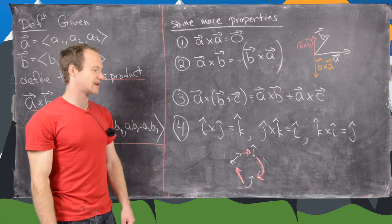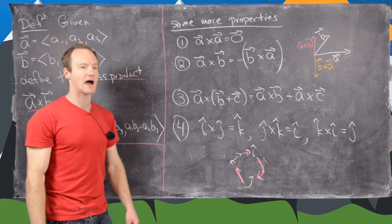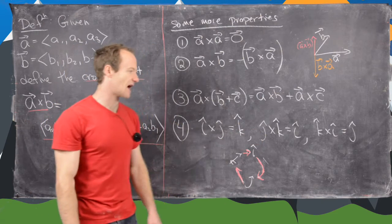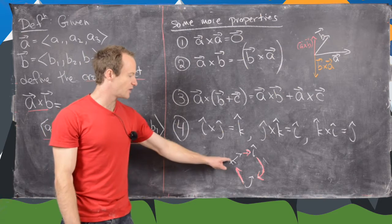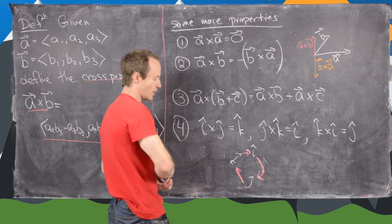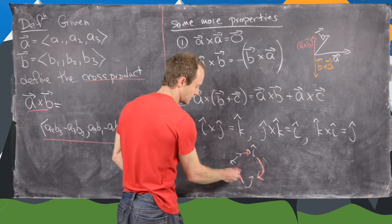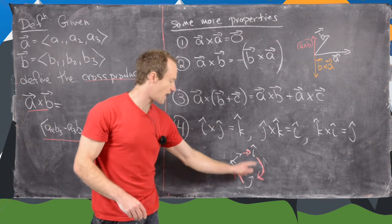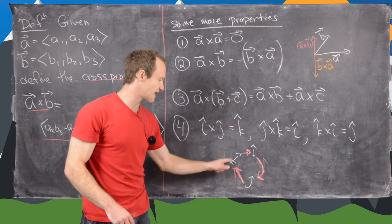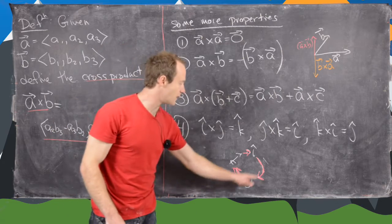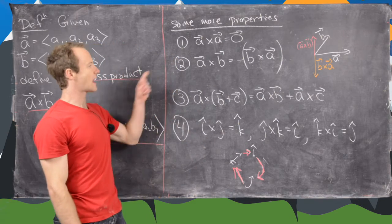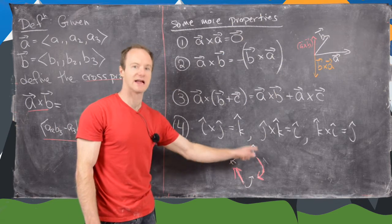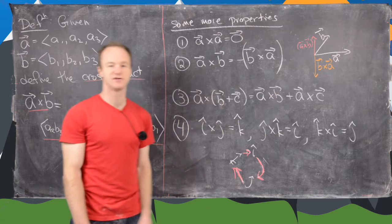We also have the distributive rule for the cross product over vector addition. The standard basis vectors in R3 obey the cross product rules as follows: i cross j = k, j cross k = i, and k cross i = j. You can think of this as a loop with i, j, k in a circle — going clockwise gives plus signs, so i cross j = k, j cross k = i, k cross i = j. Going in reverse gives minus signs, so j cross i = −k, i cross k = −j, and so on.